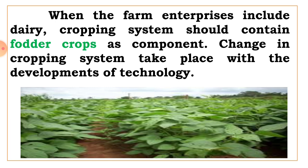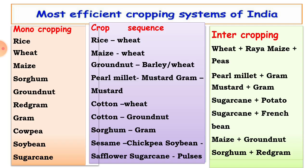The most efficient cropping system of India includes monocropping, crop sequence, and intercropping. In monocropping, only one crop is grown — in Kharif or summer season. Only one crop is grown year after year on the same piece of land. Examples of monocropping: rice, wheat, sorghum, maize, gram, red gram, groundnut, sugarcane, cowpea, and soybean.